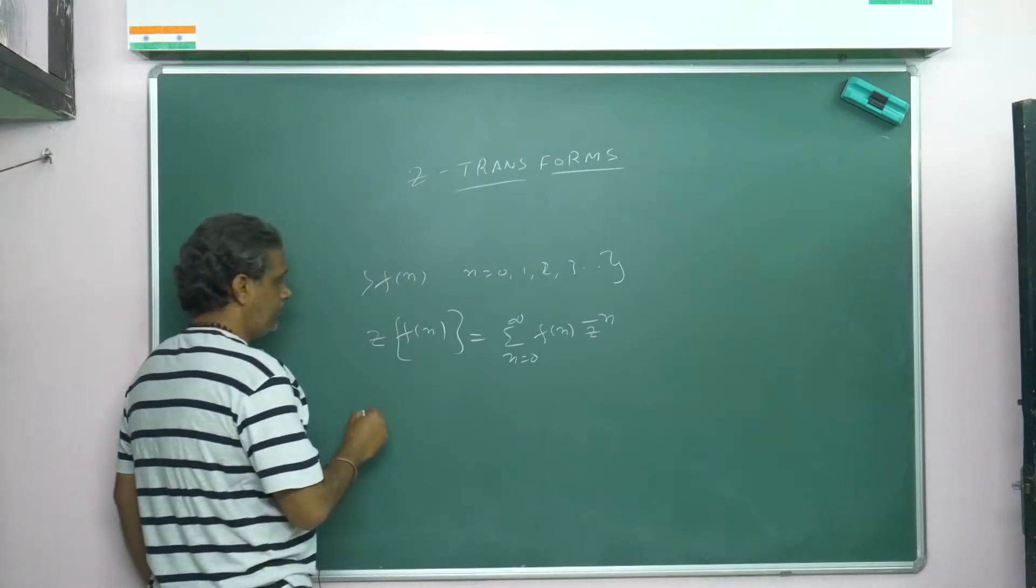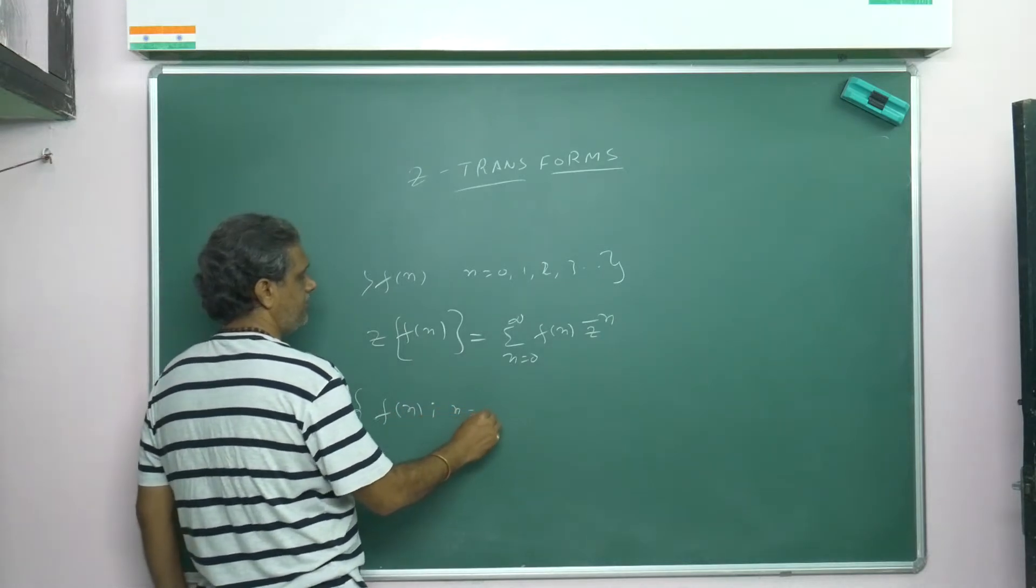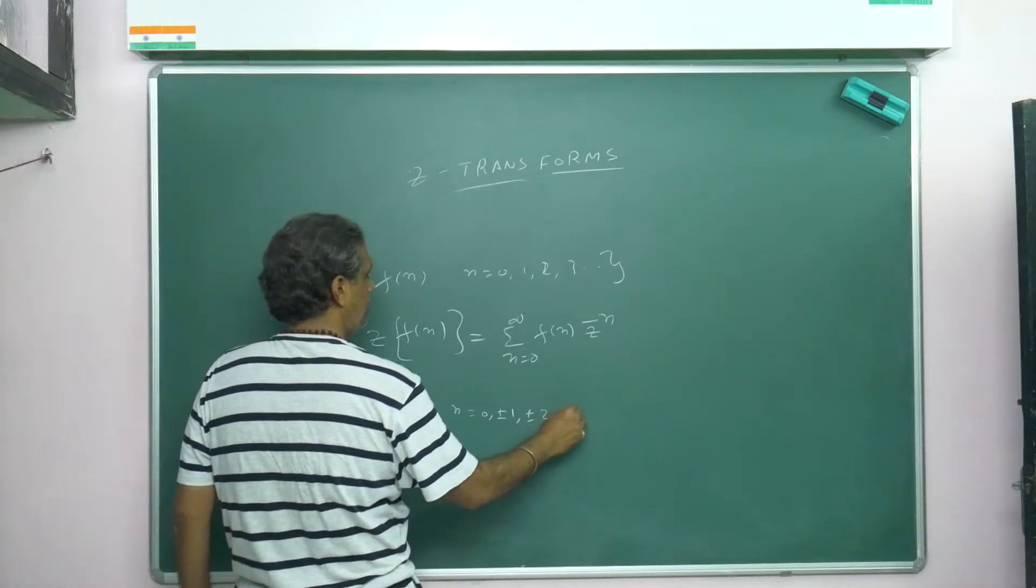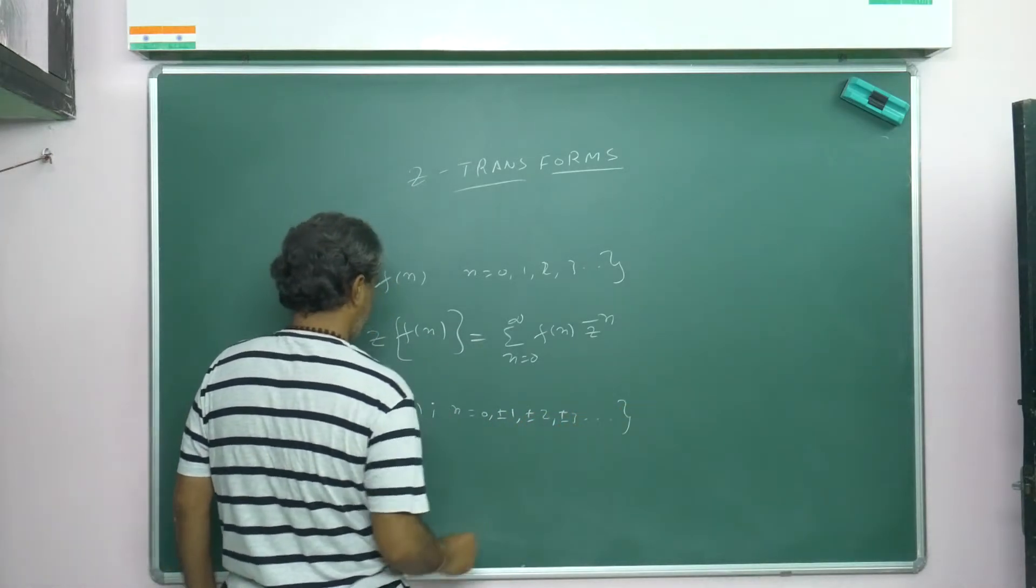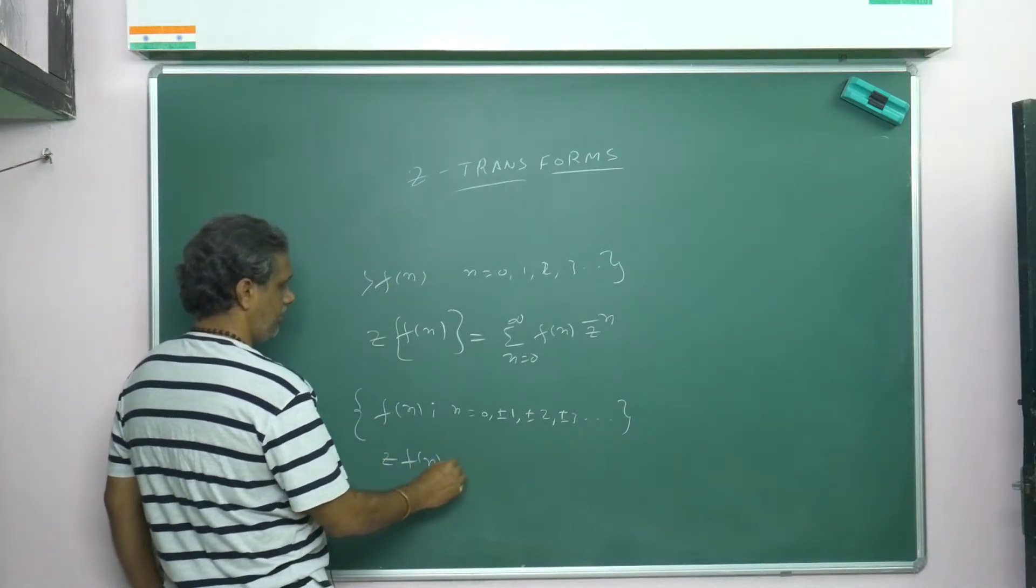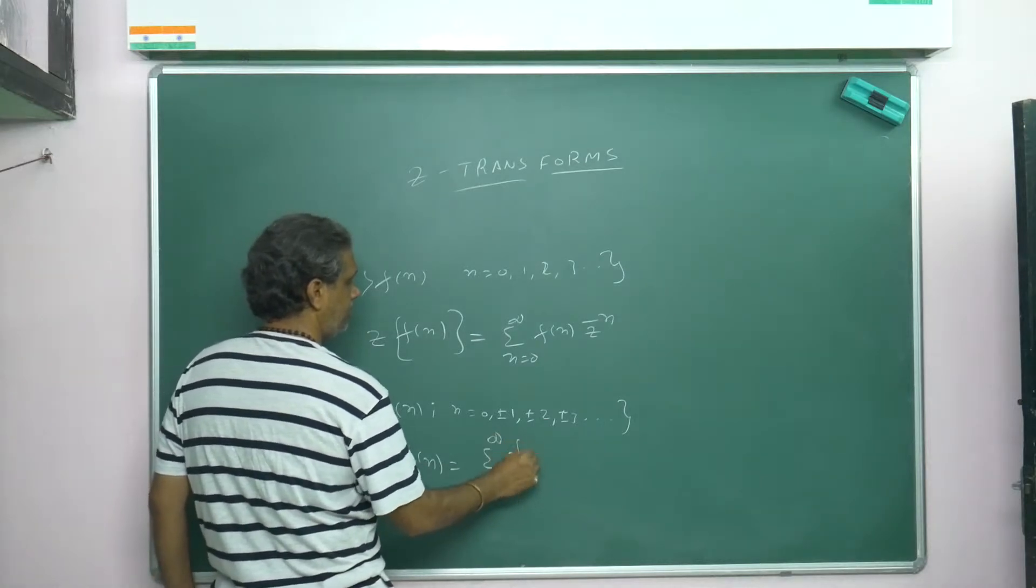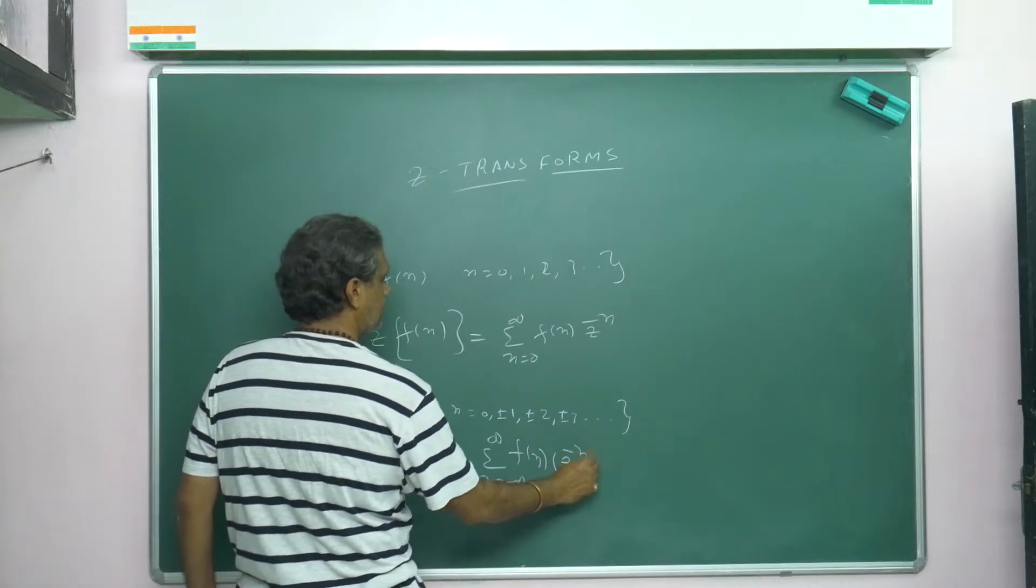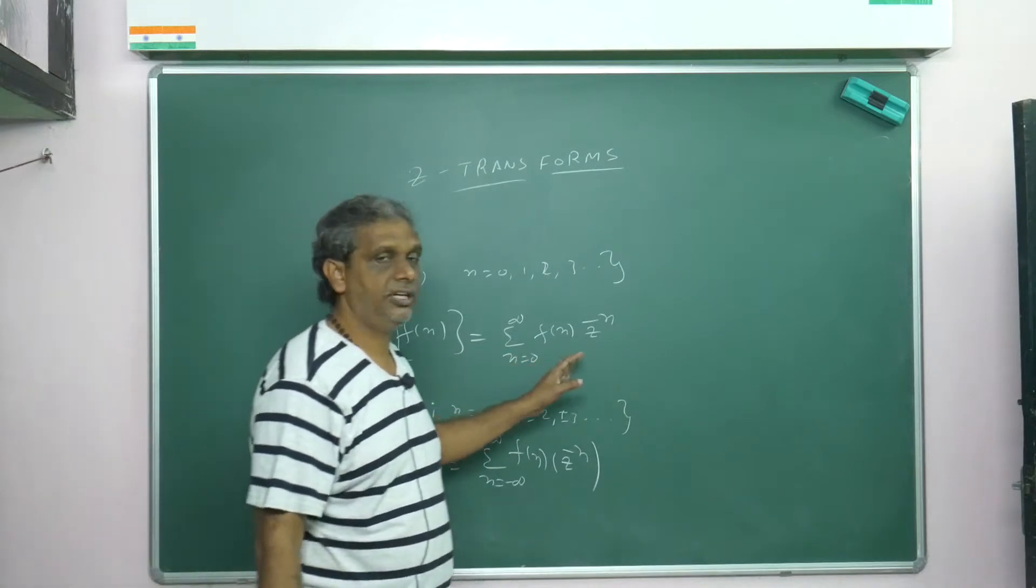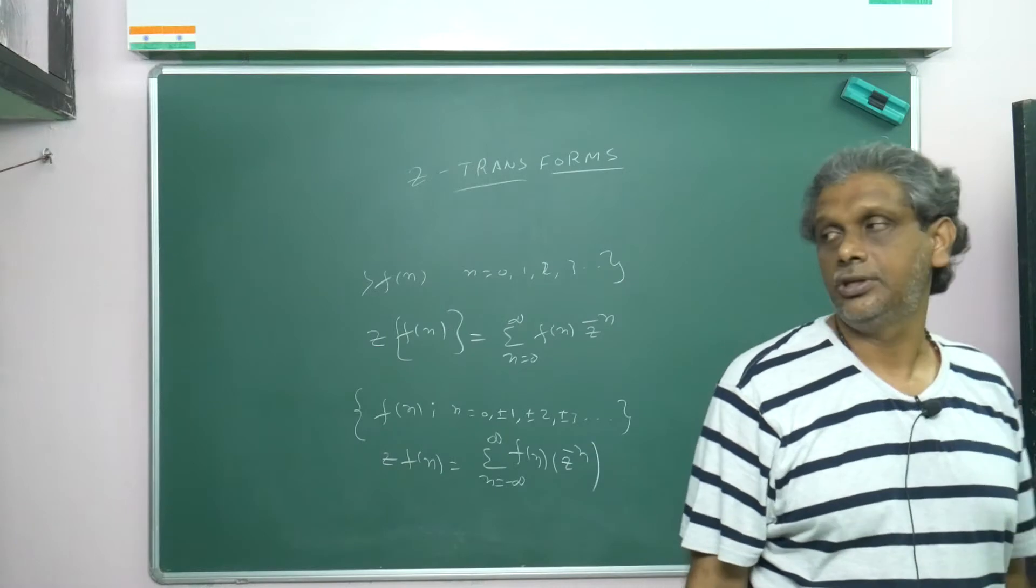n is running from 0 to infinity, f(n) times z to the power minus n. In some cases, they will discuss n equal to 0, or plus/minus infinity. For negative and positive both numbers, if they discuss Z{f(n)}, you can write sigma n equals minus infinity to plus infinity, f(n) z to the power minus n. That's the two-sided transform. This is one-sided or single-sided. At your level, we can discuss only this, we don't want to go to negative values, only positive.